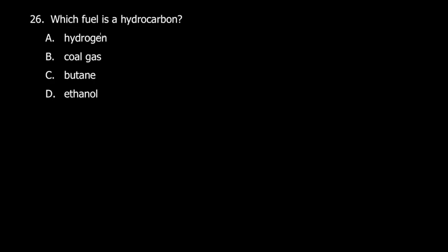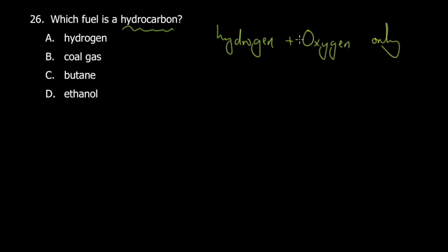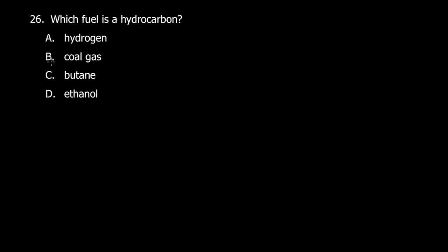Question 26: which fuel is a hydrocarbon? The buzzword 'hydrocarbon' means it contains hydrogen and carbon only. Coal gas contains carbon; hydrogen is just an element; butane is definitely a hydrocarbon. Ethanol is an alcohol and contains oxygen as well. So we choose butane.